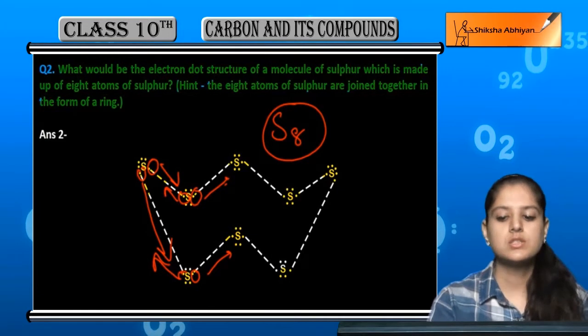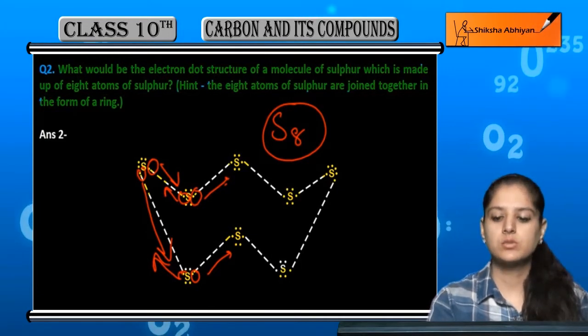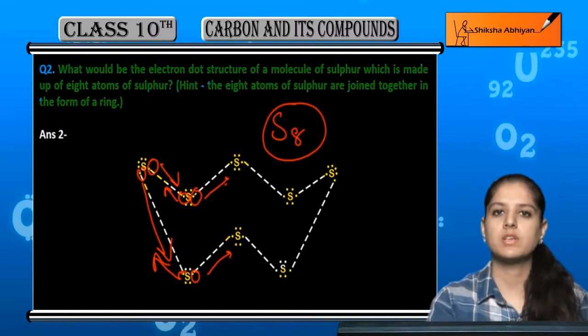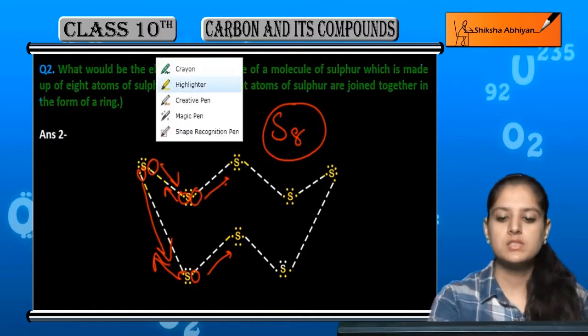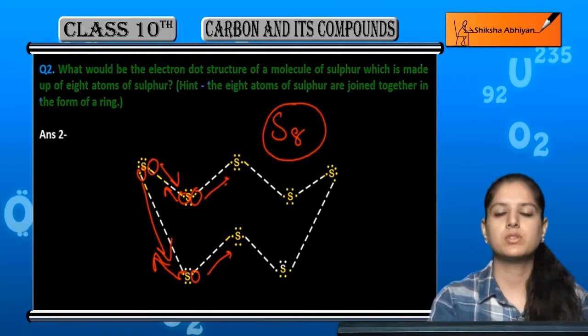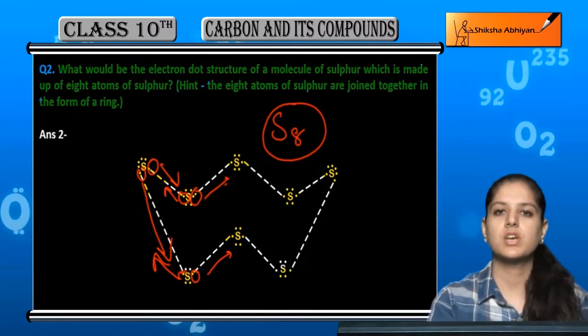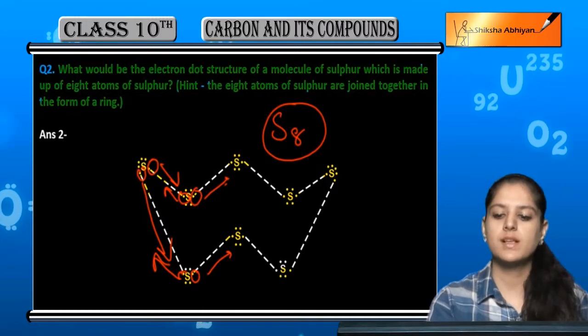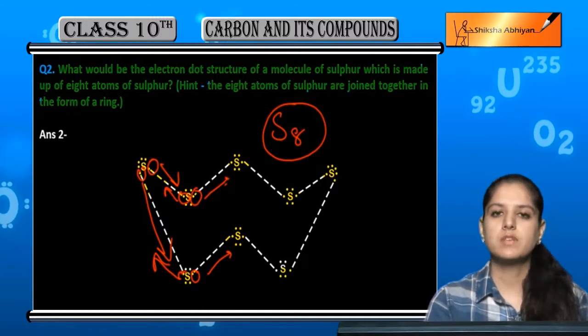So similarly jitne bhi atoms hai, ek dusre ke saath electrons share karte hain. Iske saath ring ki formation ho jati hai - the electron dot structure of sulfur molecule.